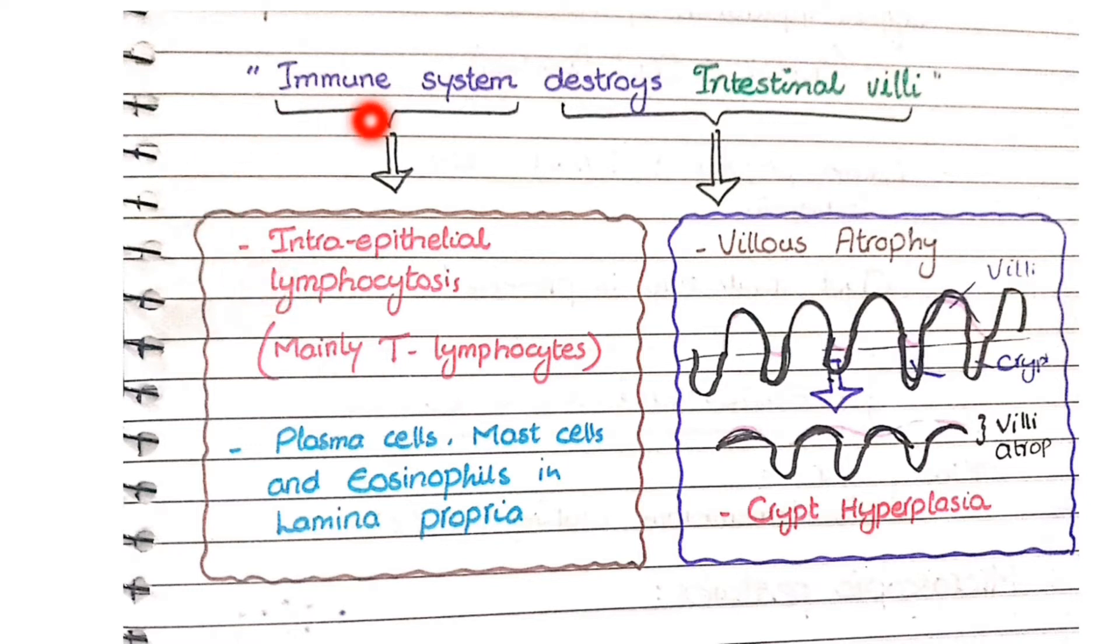This immune system in the form of lymphocytes will appear in the epithelial cells of the villi and will destroy these epithelial cells. So you see intraepithelial lymphocytes. Other than these lymphocytes, the immune system can also be in the form of plasma cells, mast cells, and eosinophils. All these can be present in the lamina propria.